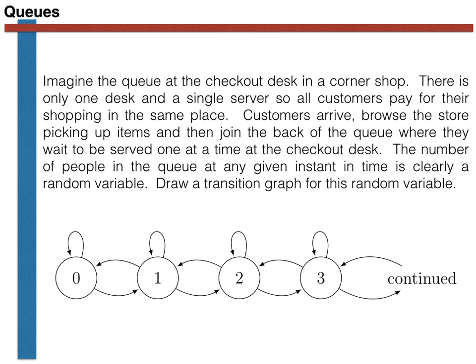At any instant in time, at most one person can join the queue. Furthermore, they go to the back of the queue and thus increase the value of the random variable by one. Customers, meanwhile, are served one at a time, and so the number of people in the queue can only decrease by one in an instant in time.